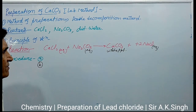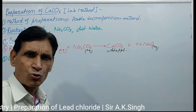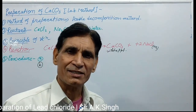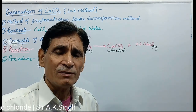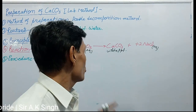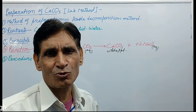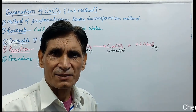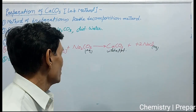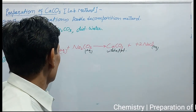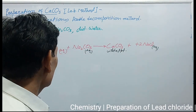Now add sodium carbonate solution to the calcium chloride solution slowly with constant stirring. As sodium carbonate solution is added, formation of precipitate starts. Add sodium carbonate solution in slight excess to completely precipitate out the calcium carbonate.